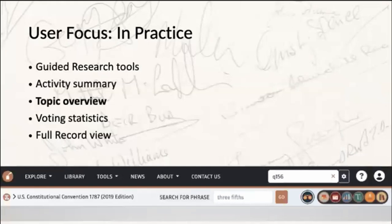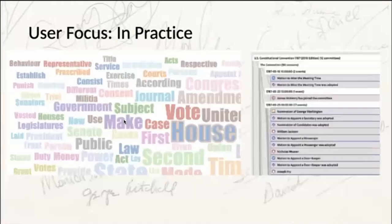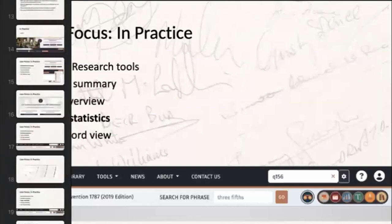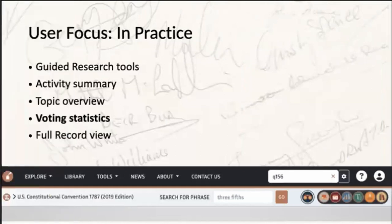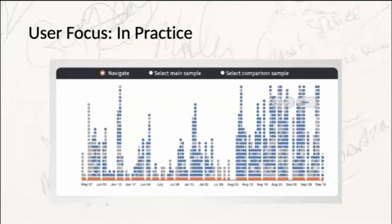The next view is the Topic Overview — go back to the ribbon at the top of your screen and click the green circle. This shows something like a word cloud displaying all of the project's keywords. When you select one word, the events relevant to that keyword populate below. This is another way of allowing users to approach the major topics they might be interested in. Moving on from there, clicking the light blue circle with what looks like a bar graph takes you to Voting Statistics.